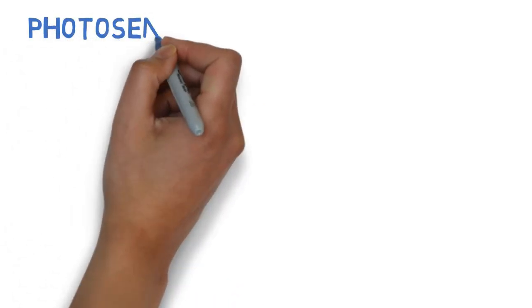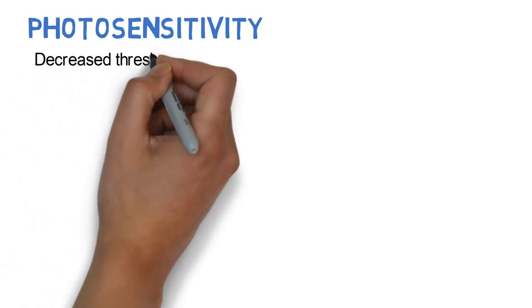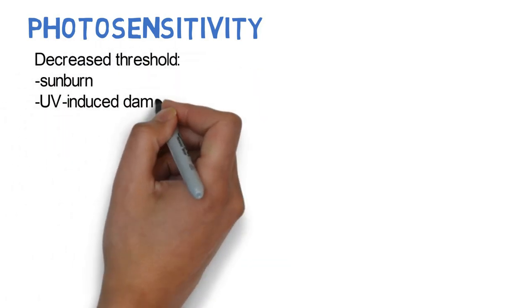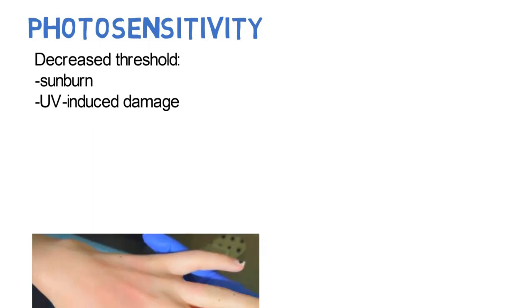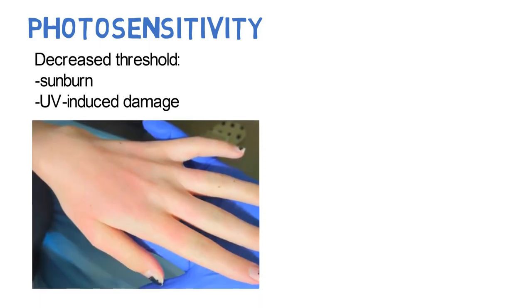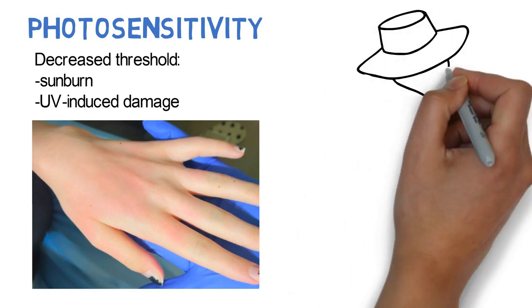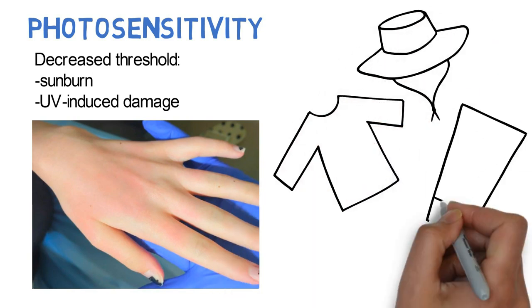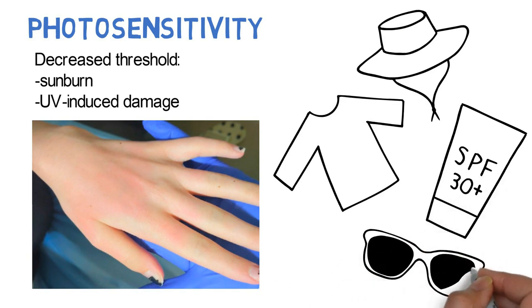Targeted therapies may make the skin more sensitive to the sun by decreasing the threshold for sunburn and UV-induced skin damage. A patient with photosensitivity may present with blistering and painful erythema from brief sun exposure. The patient should be counseled on strict sun protection. Please refer to our video on tips for sun protection for more details.